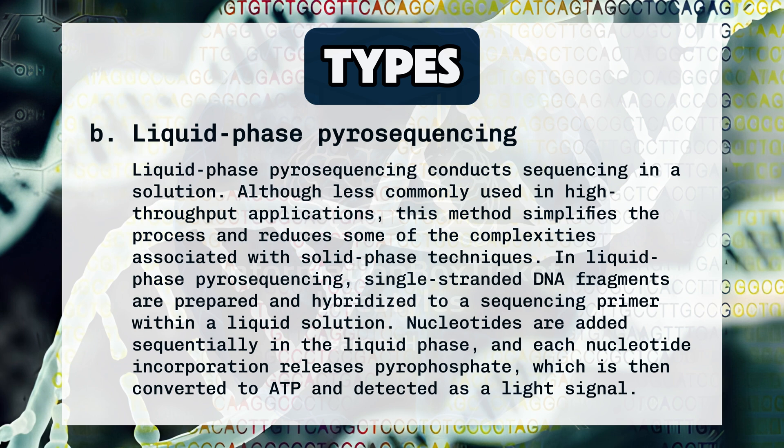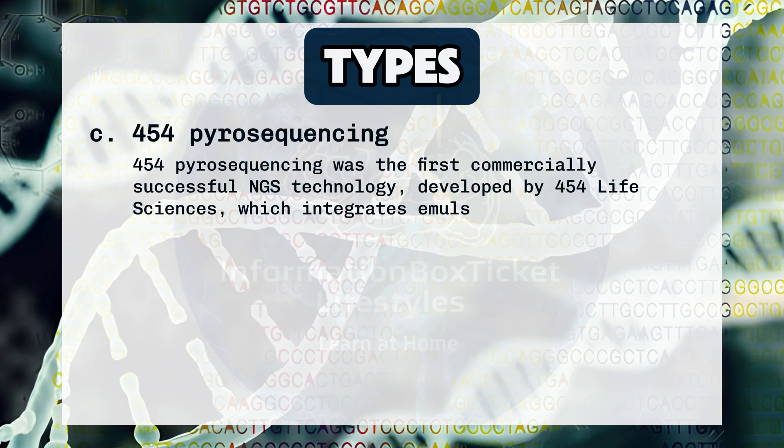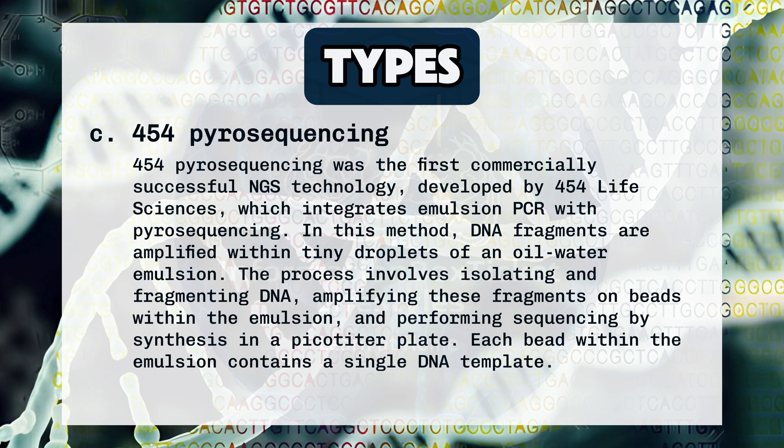454 Pyrosequencing was the first commercially successful NGS technology developed by 454 Life Sciences, which integrates emulsion PCR with pyrosequencing. DNA fragments are amplified within tiny droplets of an oil-water emulsion. The process involves isolating and fragmenting DNA, amplifying these fragments on beads within the emulsion, and performing sequencing by synthesis in a picotiter plate. Each bead within the emulsion contains a single DNA template.